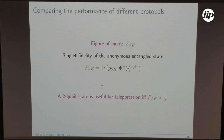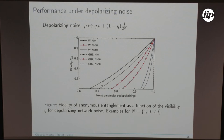We obtained analytical expressions for all fidelities and threshold values, but here I show a plot to visualize the results. For depolarizing noise, the Y-axis shows fidelity of the anonymous entangled state and the X-axis shows the visibility parameter. As we increase the number of parties the fidelity decreases. Importantly, for each noise value, the fidelity is much higher with the W state protocol than with the GHZ state protocol — conditioned on succeeding in the measurement step.